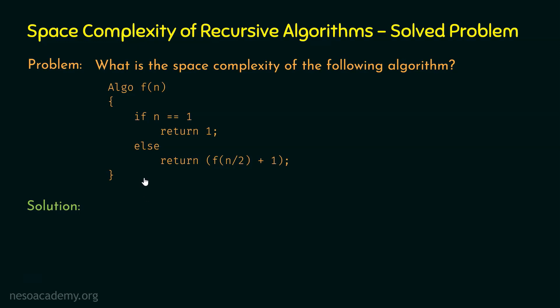In this algorithm, we are not using any complex data structure. We are using the simple variable n, which will take a constant amount of memory space. Hence, it will not contribute much to the space complexity. So we are left with the depth of recursion. In order to find the space complexity of this algorithm, we need to find the depth of recursion.